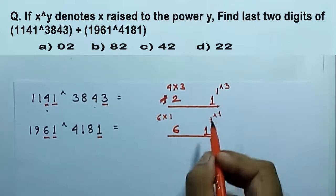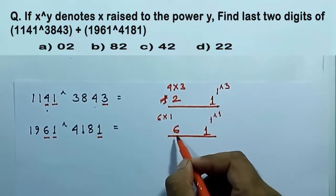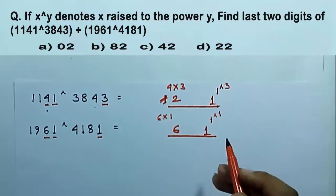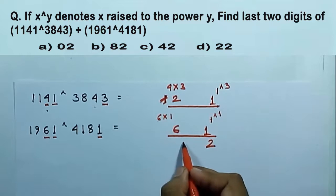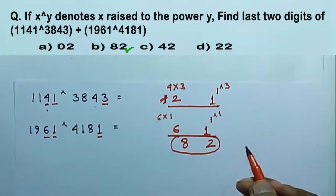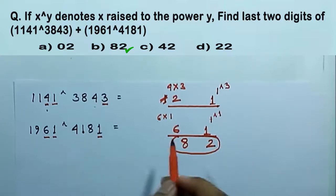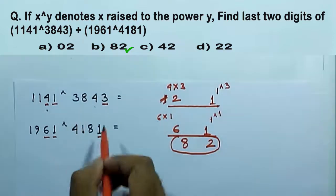Now these are the last two digits of this number and these are the last two digits of this number. Now we can add these two small numbers, which is 21 and 61. 21 plus 61, which is 82. So 82 is the answer. So we can see that the steps are very easy. It will take hardly 10 to 15 seconds to calculate the last two digits of this summation.